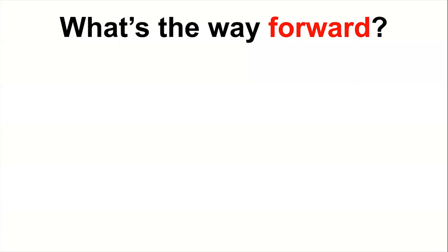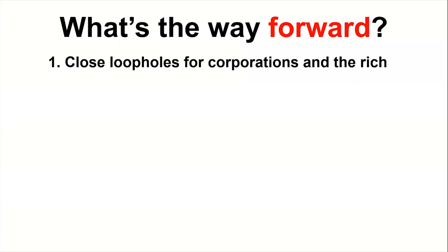The first strategy is closing tax loopholes for corporations and the rich. There is a lot of work that can be done here because there are simply a lot of tax loopholes and subsidies out there. One benefit of this strategy is that you do not run into the supermajority requirement — a simple majority of the legislature has the power to close a tax loophole. In terms of what's politically viable, closing tax loopholes and subsidies has a lot of appeal.